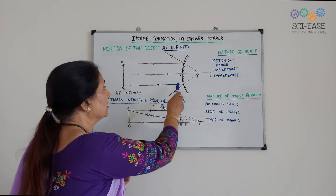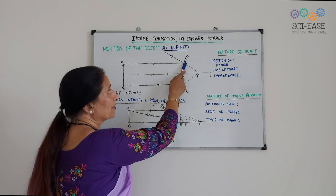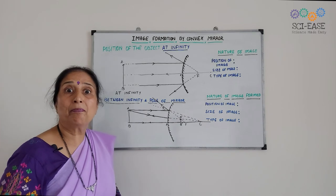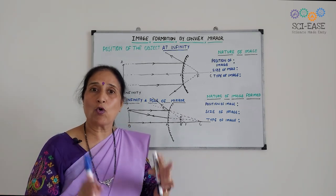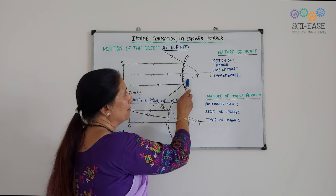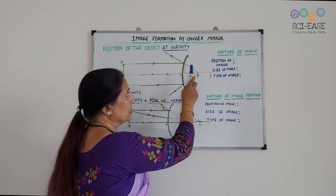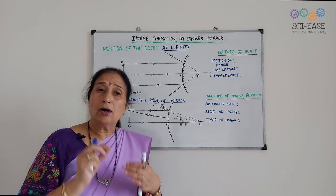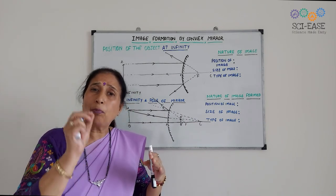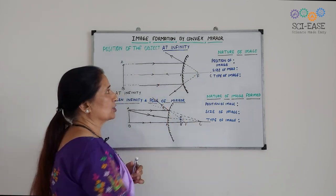The rays will diverge, and when we produce these rays backward, what we will see is that they will pass through the focus. So the two rays are meeting at the principal focus, and here a very diminished, or point-sized, image is formed at this point.